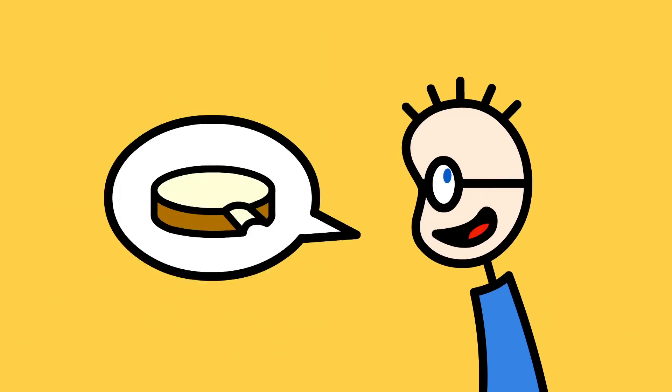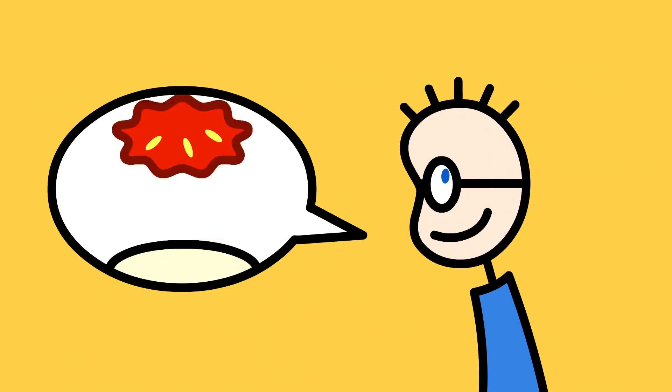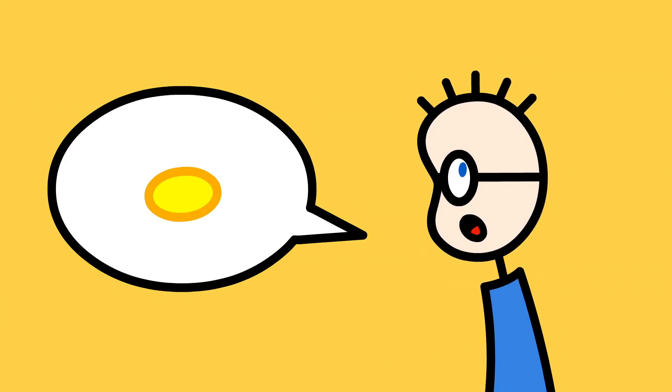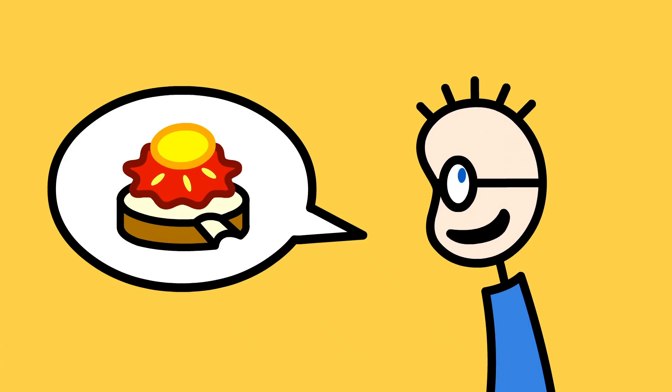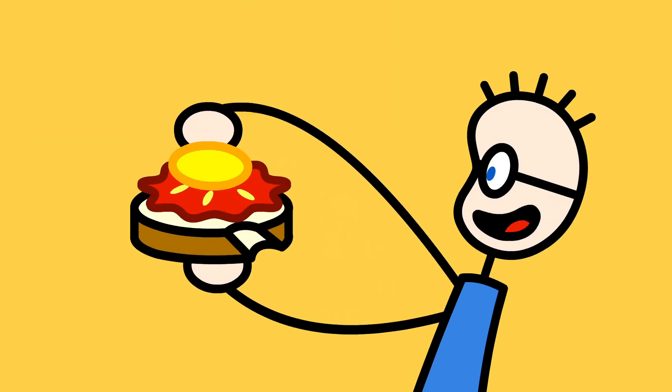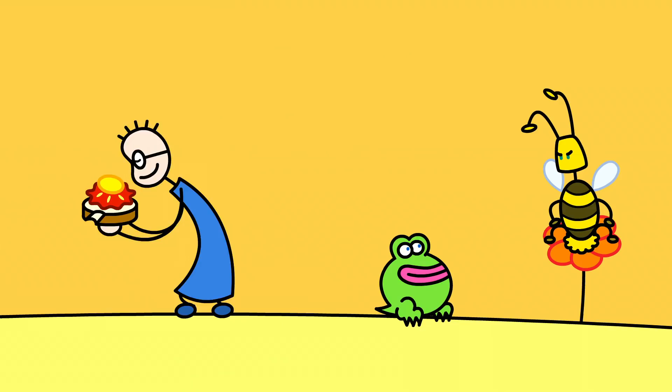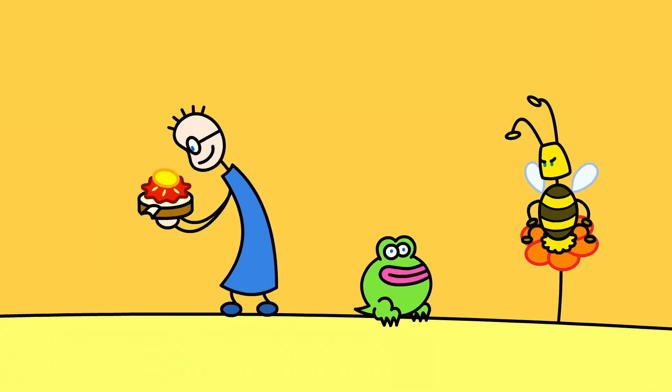Aha. If bread is Brombo, and strawberry jam is Jambalamba, and honey is Hungo, that means a slice of bread with strawberry jam and honey in Fronglish is... Brombo-Jambalamba-Hungo! Chiba-chiba!